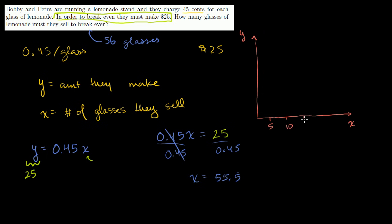5, 10, 15, 20, 25. Actually, I need to go by even larger increments to get to the point that we're talking about. Let me go by increments of 10. 10, 20, 30, 40, 50, 60. So that's the number of glasses.